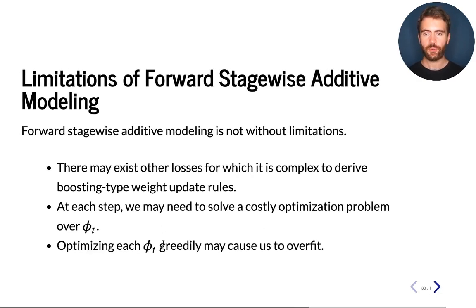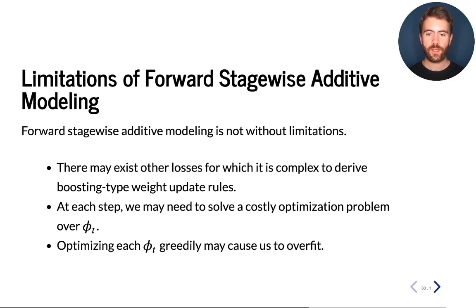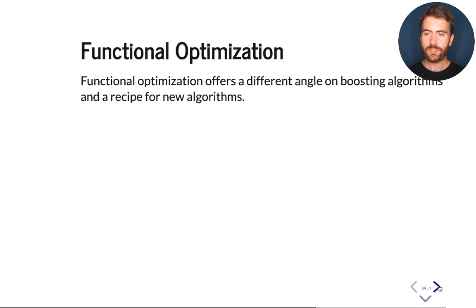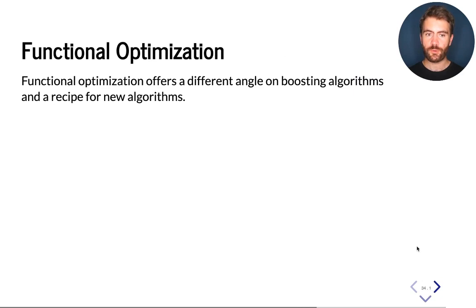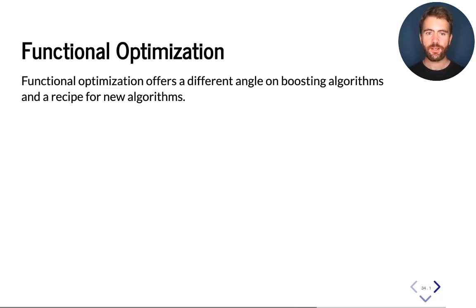We would like an algorithm that works with many different losses in a general way, is still easy to train, and can be controlled for overfitting more effectively. The resulting algorithm is called gradient boosting. Before defining it, I will talk about functional optimization — gradient boosting is an instance of this principle.